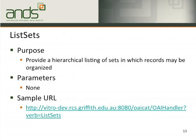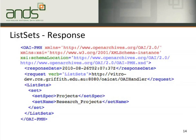The next verb is ListSets — it provides a list of sets with which records may be organized. In this command I ask Griffith's unit OAI cat to show me all sets in the repository. The response shows we only get one set, named 'research project'.